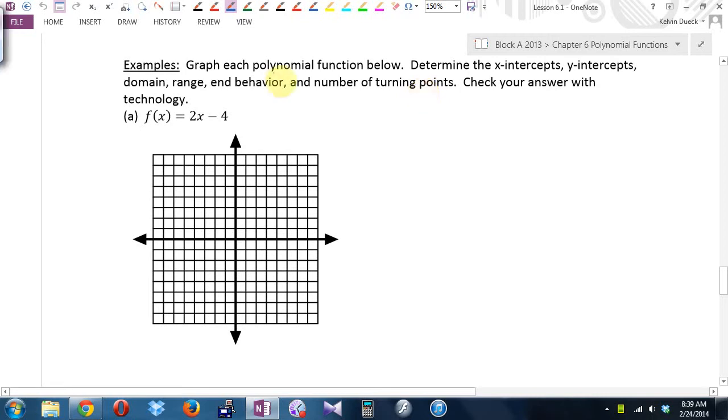So it says graph each polynomial function below. And then it says determine the x-intercepts, the y-intercepts, the domain, the range, and then here's two new terms, the end behavior and the number of turning points.